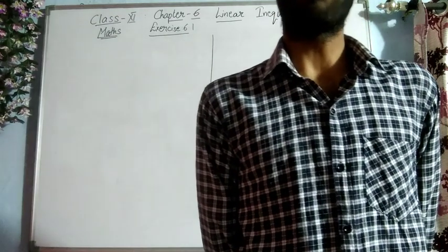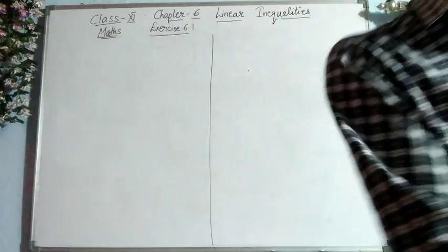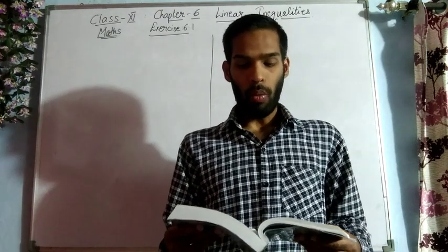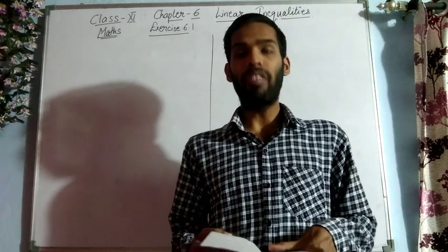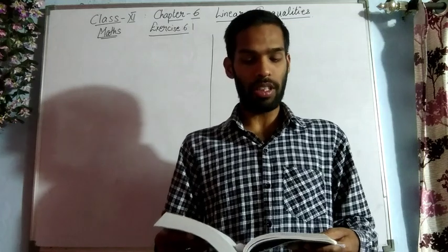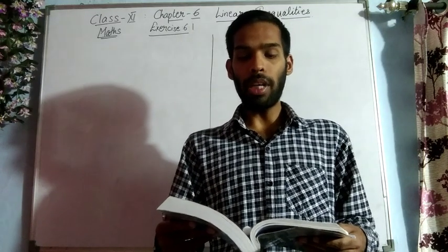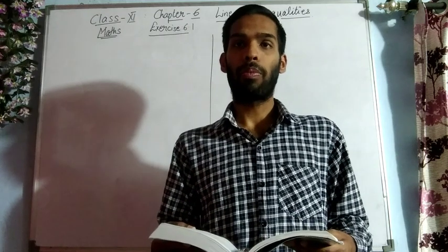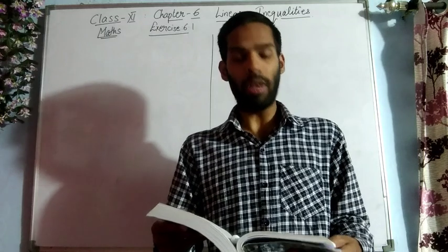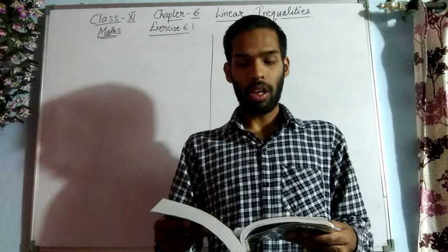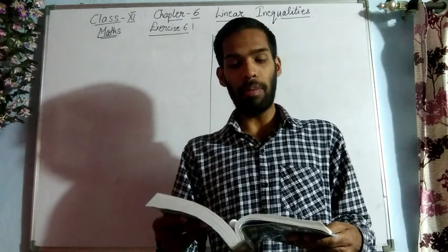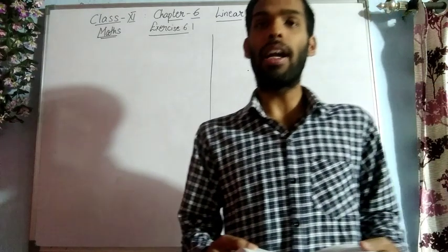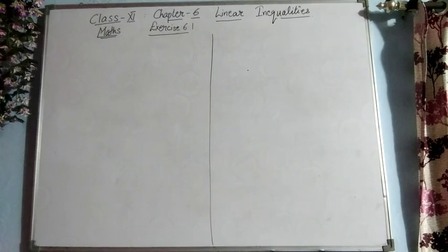The first question is Question Number 22. To receive Grade A in a course, one must obtain an average of 90 marks or more in five examinations, each of 100 marks. If Sunita's marks in the first four tests are 87, 92, 94 and 95, find the minimum marks that Sunita must obtain in the fifth examination to get Grade A in the course.